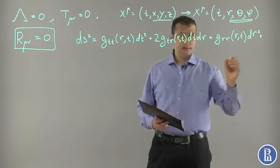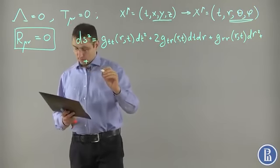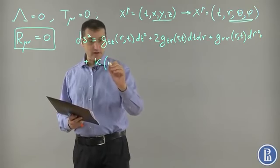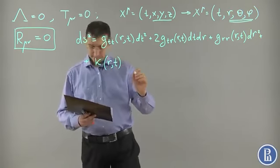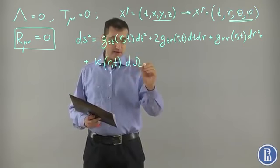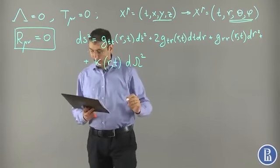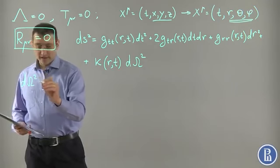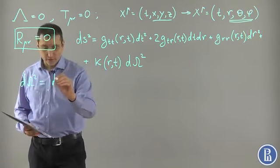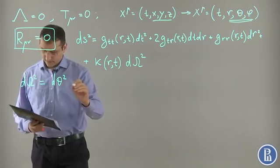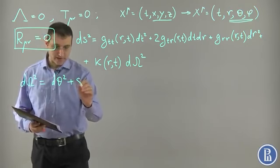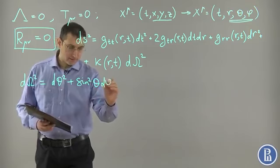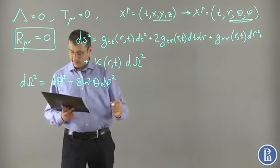Plus k, which is a function of r and t only, times d omega squared. What is d omega? d omega squared is a metric, well-known metric, on the unit sphere, which looks, in spherical coordinates, like this. So this is a metric on the unit sphere.